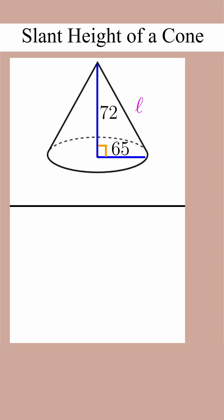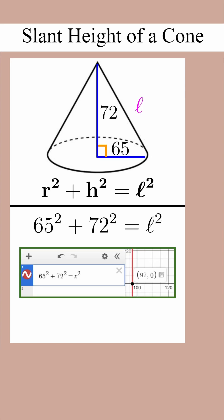Finally, we're ready to add the radius and the height to our diagram and we can use the Pythagorean theorem. Solving this equation by hand or on Desmos gives us a slant height of 97.